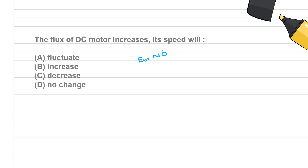The answer is that flux is inversely proportional to N — then if flux increases, speed is decreasing.